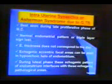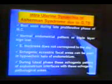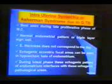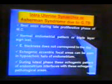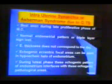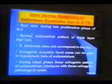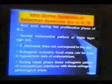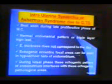Intrauterine synechiae is another presentation of tubercular endometritis, known as Asherman's syndrome. Though long diagnosed, it was considered very rare but is now seen quite often. We pick up cases on sonography but manage by hysteroscopy. The best time to examine is during the late proliferative phase of the menstrual cycle, when you can visualize calcified synechiae better than in any other phase. The endometrium thickness does not correspond to the day of menstruation; it is echogenic with eccentric focal areas.